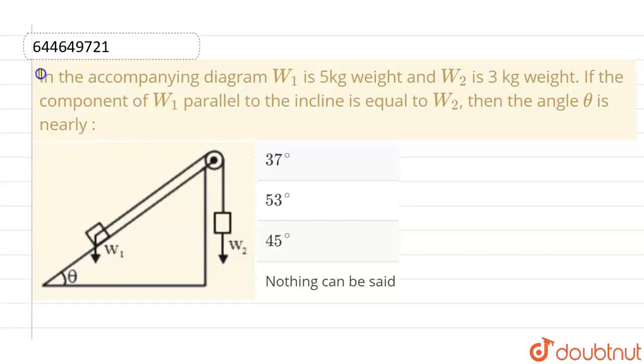Hello everyone. If we talk about this question, this given question is in the accompanying diagram. W1 is 5 kg weight and W2 is 3 kg weight. Now, if the component of W1 parallel to the incline is equal to W2, then the angle theta is nearly, and these are the given options.